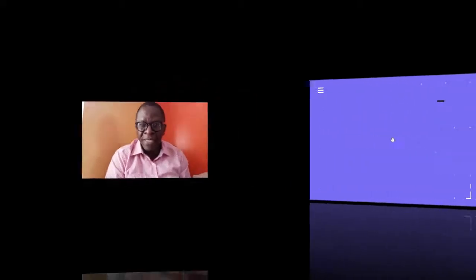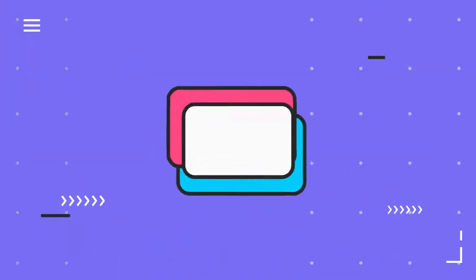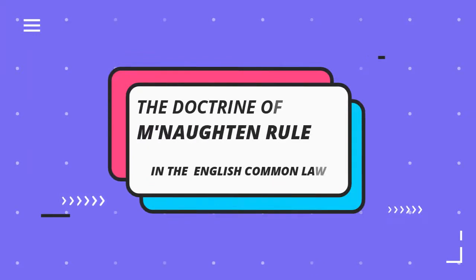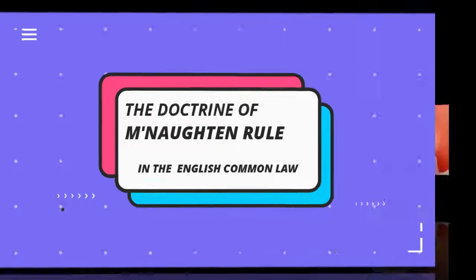Hey viewers, this is a continuation of our psychology and the law series, and we are going to look at the McNaughton Rule — the doctrine that is well known in common law traditions, used in criminal justice proceedings. It deals with testing the sanity of a person.